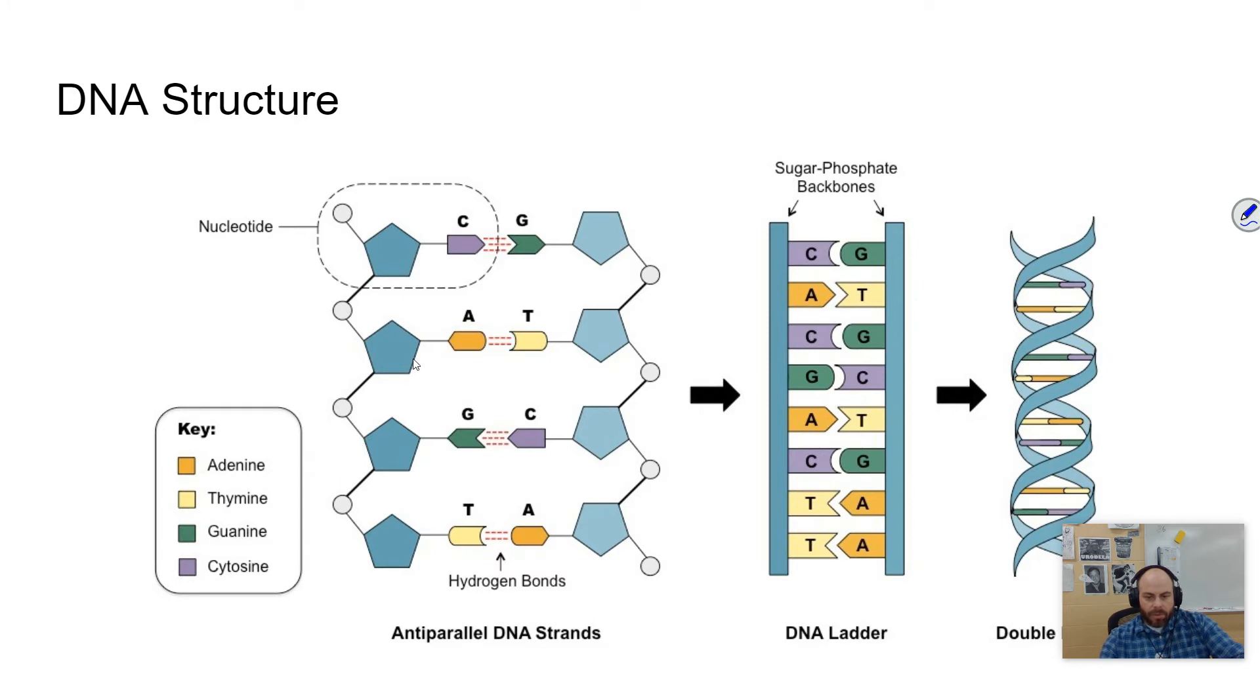You have some pairing rules associated with this. Cytosine always pairs with guanine. Adenine always pairs with thymine, unless we're talking about RNA, which we'll get to in just a second.